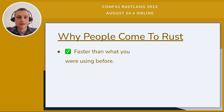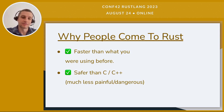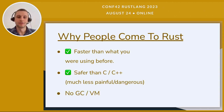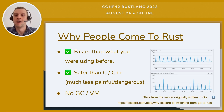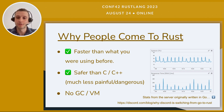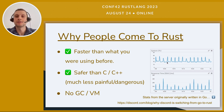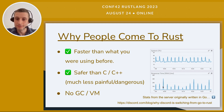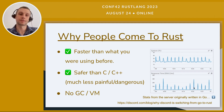Why do people come to Rust? Well, it's probably faster than what you were using before, and it's also safer than C and C++, with less painful dangers to coding. There's no garbage collector virtual machine. Here is a famous picture from the blog post about why Discord is switching from Go to Rust. You can see the spikes are basically the CPU working really hard, response times taking a lot longer than they should — pretty much from the garbage collector kicking in.